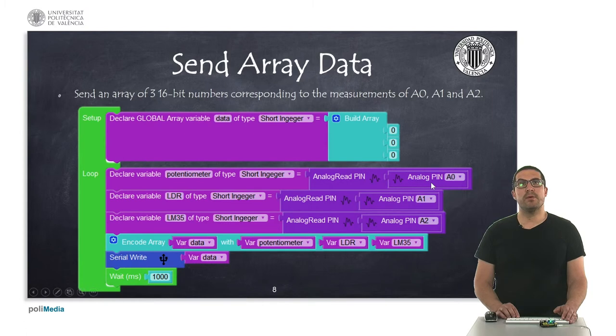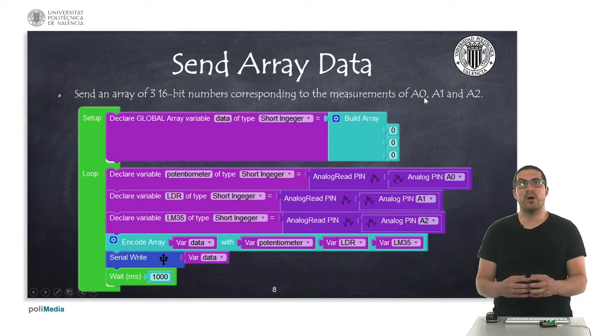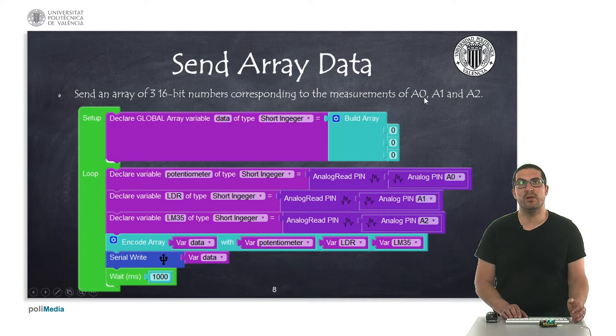In this second example what I'm doing is I'm sending separate values that I have taken or read from an analog sensor, particularly the ones I read from the pins A0, A1 and A2, and I'm packing them. I'm encoding them into an array variable of three numbers of 16 bits each.